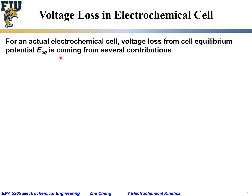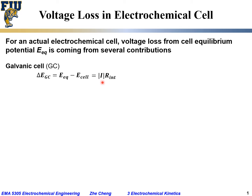That loss comes from several contributions. For a galvanic cell (GC), the voltage loss delta_GC is the equilibrium cell potential minus the actual cell potential E_cell. We can also write this as the absolute value of the current times the total internal cell resistance, lumping all losses together. This gives the voltage loss for the galvanic cell, which is equilibrium minus actual.